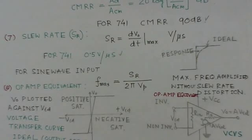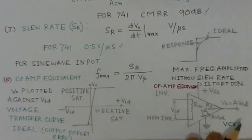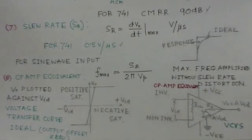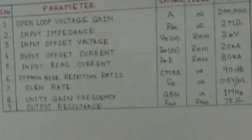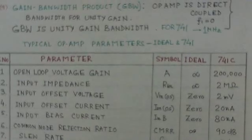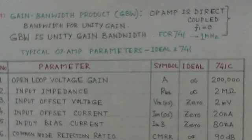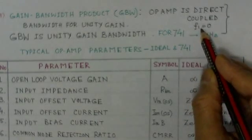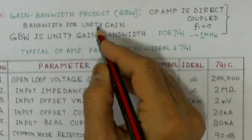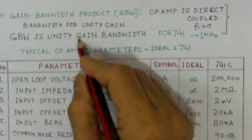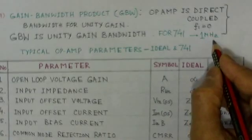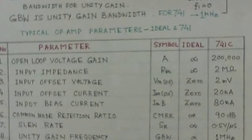In the transfer curve, the output offset voltage is presumed to be zero. The last parameter is the gain bandwidth product, GBW. Since the op-amp is a direct-coupled circuit, the lower cutoff frequency f1 is zero. The gain bandwidth product, also called unity gain bandwidth, for the 741 is 1 megahertz.